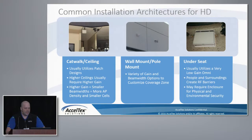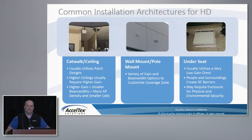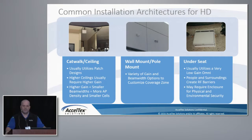Some common installation architectures for HD: catwalk or ceiling mounting where you can utilize a patch design, which gives you higher-gain antennas equaling smaller beam widths, more AP density, and smaller cells. Higher ceilings typically require higher gain. There are also wall and pole mount options. Patch antennas let you steer the RF signal to your clients. They come with articulating mounts, so you can focus the beam width further using degree markings on the mount.